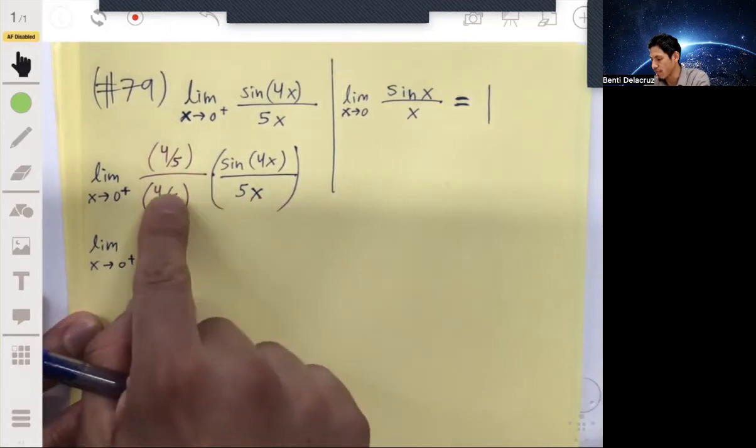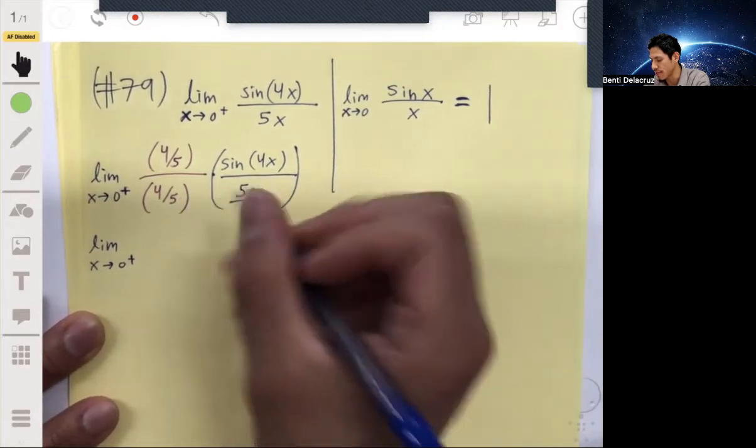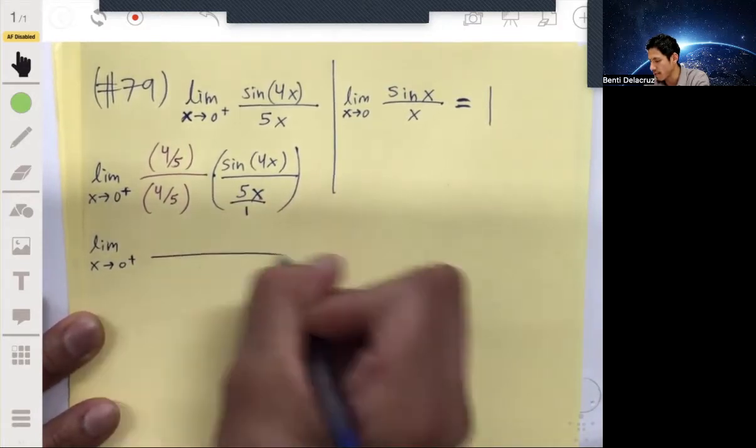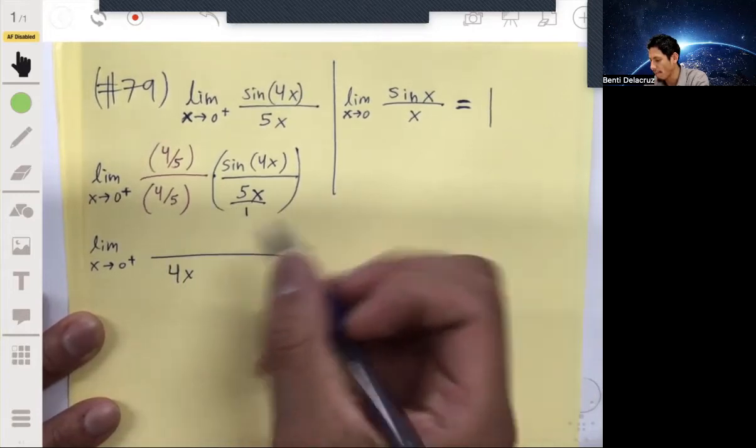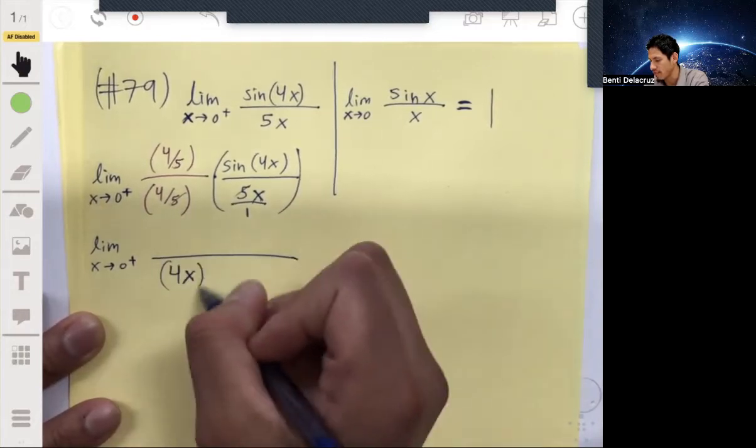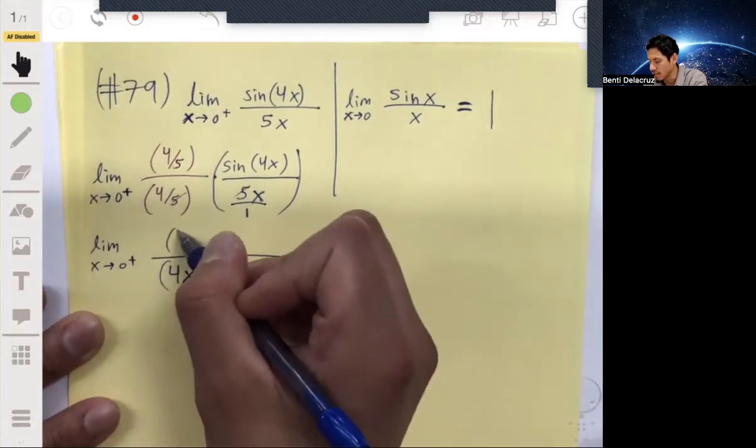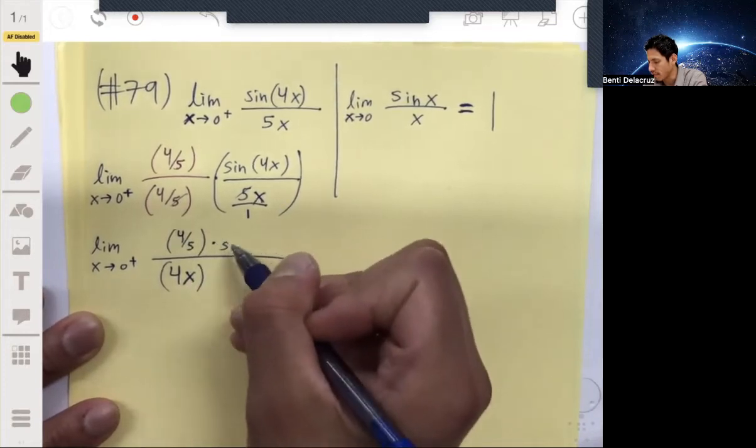Now the reason we do this is because in the denominator we can rewrite this as 4x, because the four-fifths and the five over one, those fives will cancel. So in the denominator you'll have essentially just 4x. On the top you'll still have four-fifths times sin(4x).